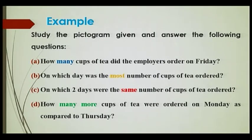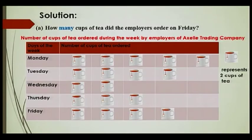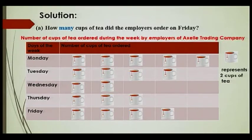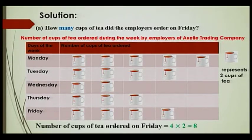Let us have a look at the solution. Part A: How many cups of tea did the employers order on Friday? Looking at the diagram, you can see there are four cups of tea. Remember, one cup represents two cups of tea. So four times two — that is eight cups of tea were ordered on Friday.